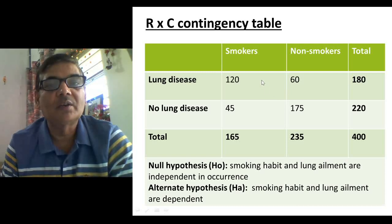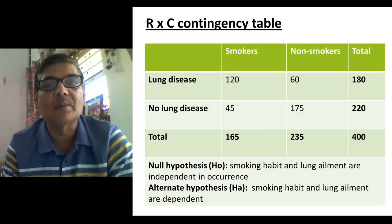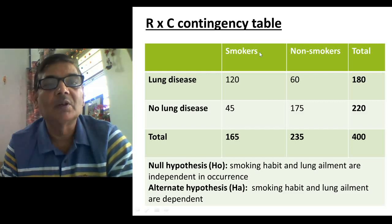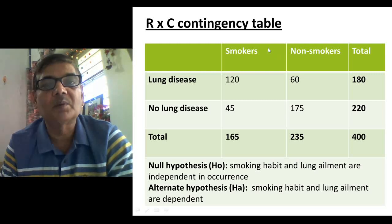In this table, you can see data is given, and by looking at this data, one can understand in what conditions the R into C contingency table is applied. There is a problem involving smokers — those who smoke cigarettes or other nicotine — and non-smokers. So two types of persons are present in the population: those who smoke and those who do not.